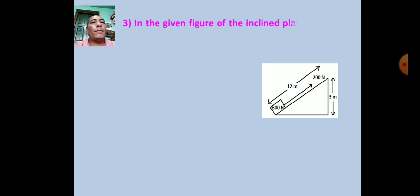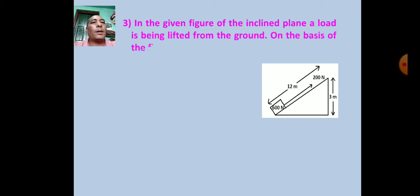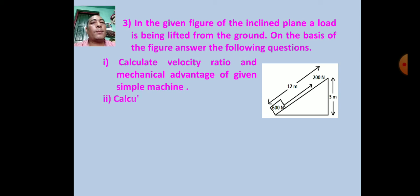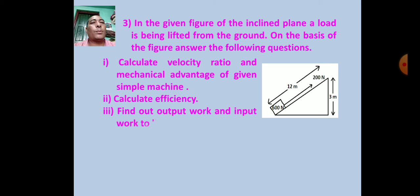Numerical 3: In a given figure of an inclined plane, a load is being lifted from the ground. Answer the following: (1) Calculate velocity ratio and mechanical advantage, (2) calculate efficiency, (3) find output work and input work to lift the load to the top, (4) keeping efficiency constant, if 150 Newton effort is applied to lift the same height, how much slope should be maintained?